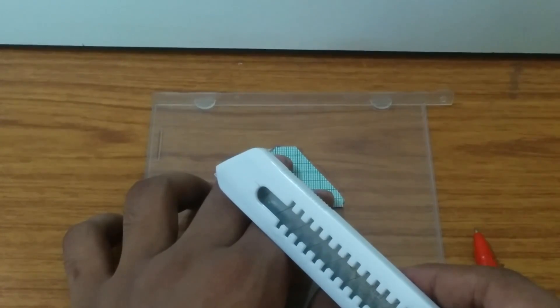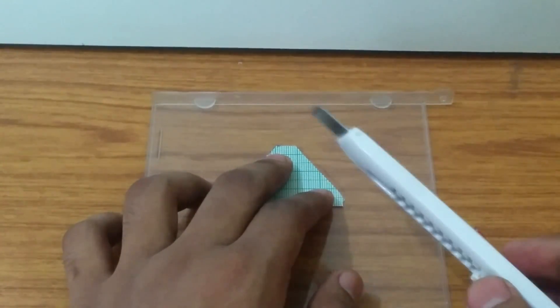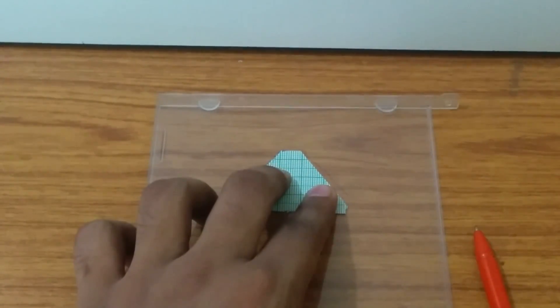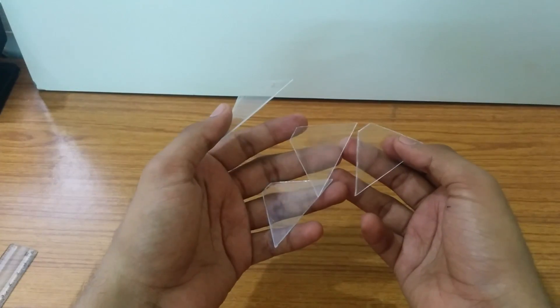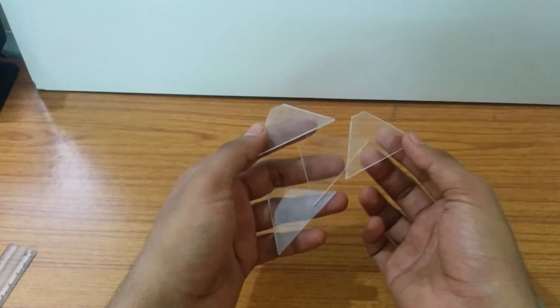And after marking the dimension, just take the cut out from the CD case. So you have to get such 4 cut outs from the CD case. It will look like this.